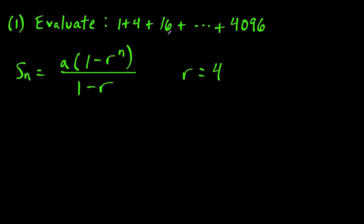Or you could take any two consecutive terms and divide them. If you take 16 divided by 4, that gives you 4, which is equal to the common ratio r. Once we have this, the next thing we need to find out is how many terms we're actually adding together.